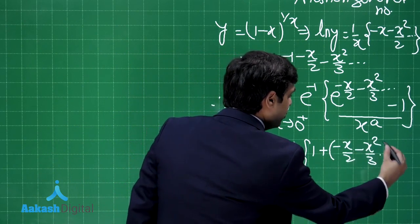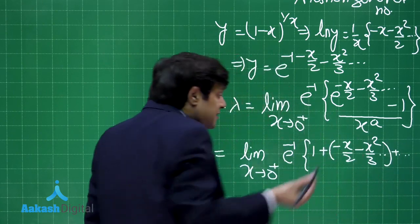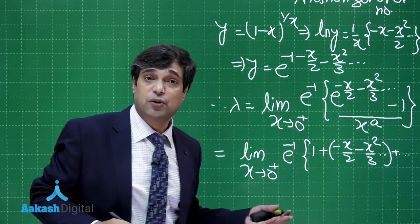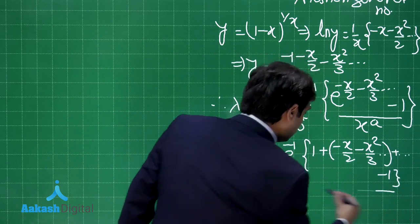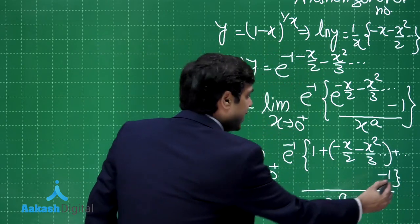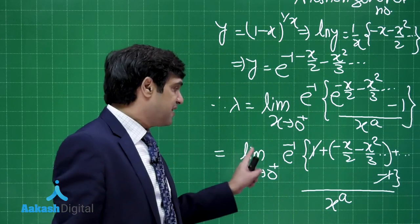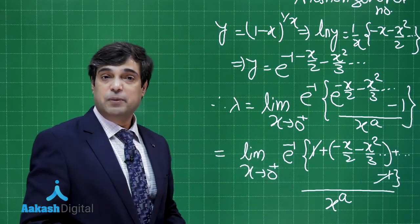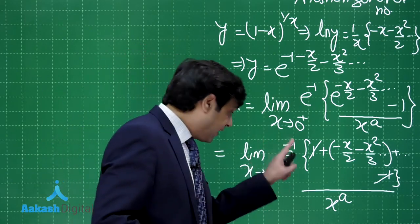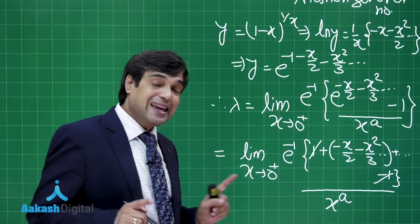Plus next terms would be having higher power of x, so no need to write because I have to go for the minimum value. Now here I observe x can be taken common and can be cancelled. So what is the minimum value you will be getting over there? You will be getting non-zero value when A is 1.